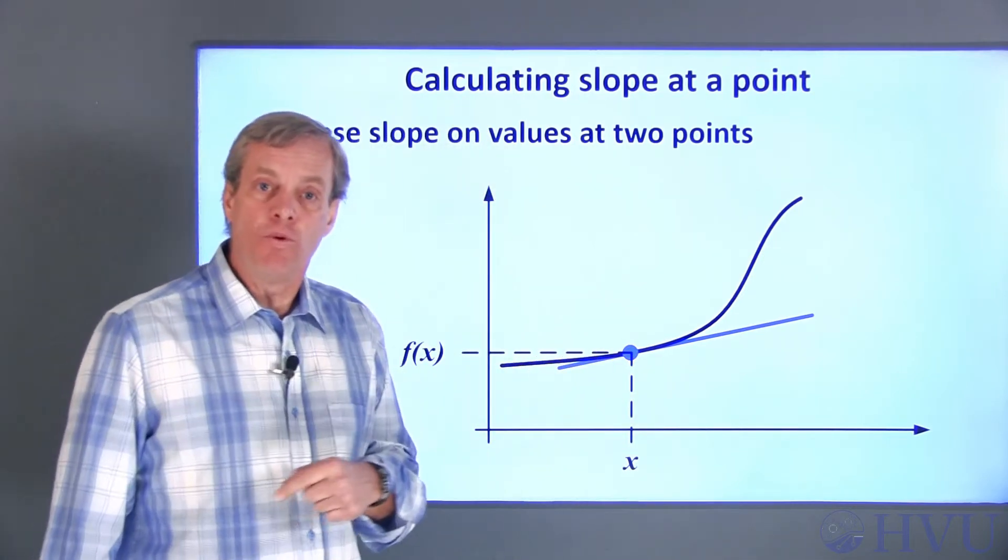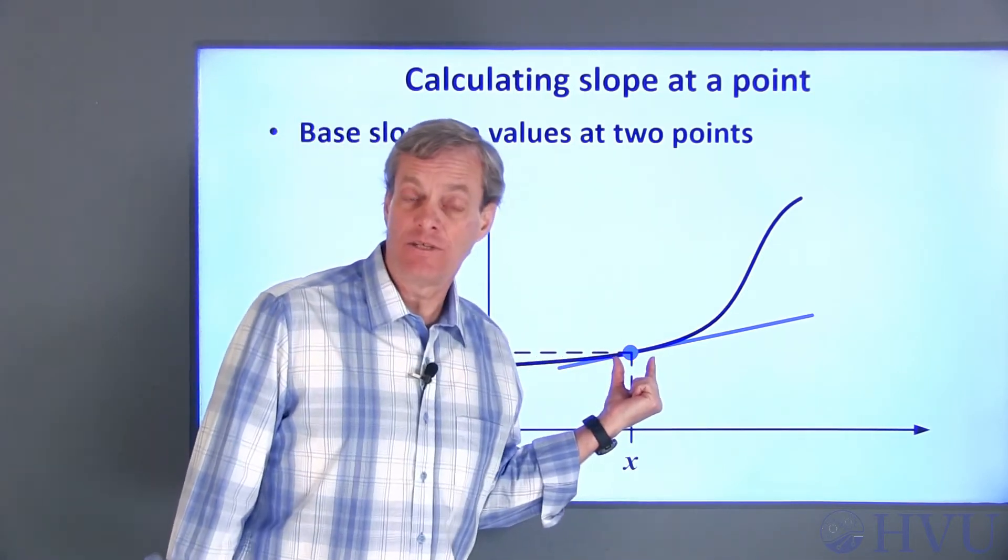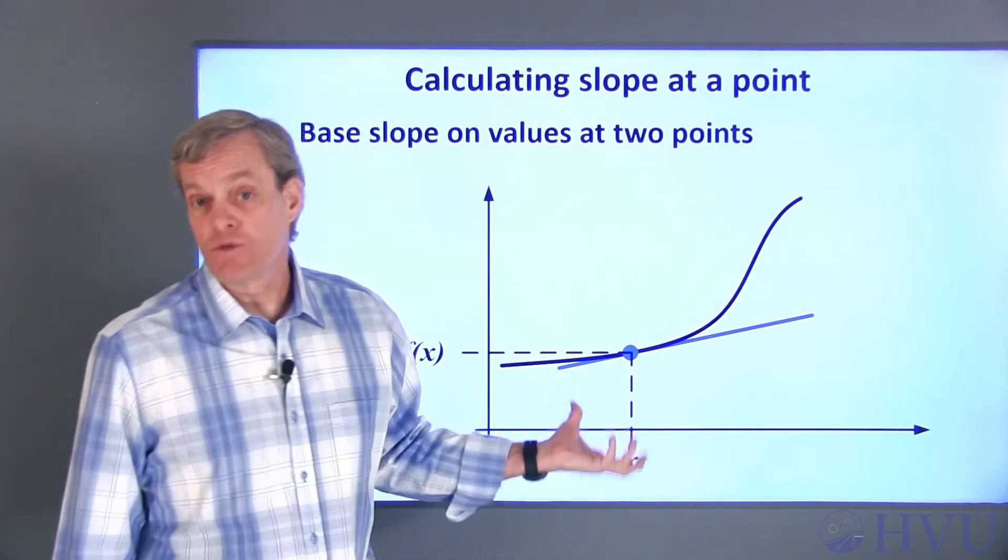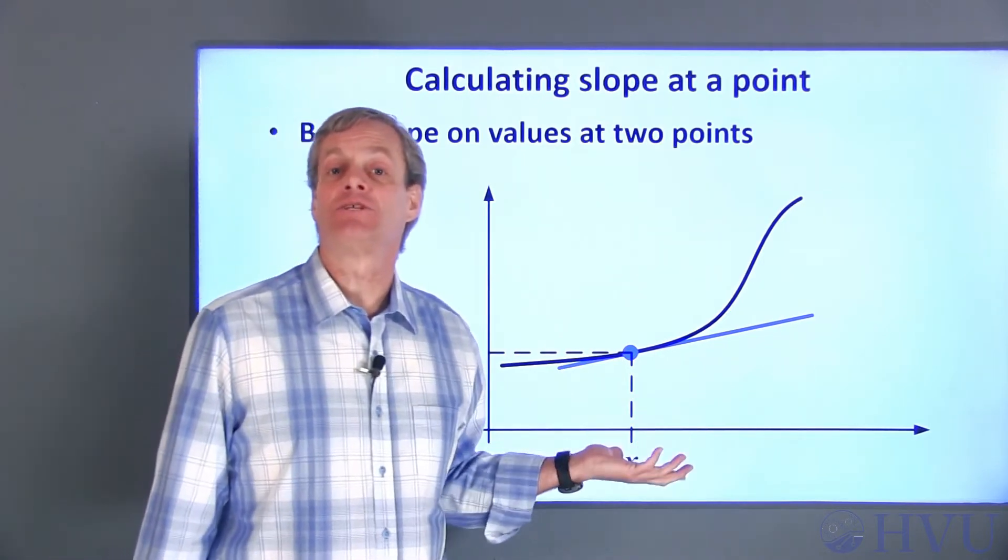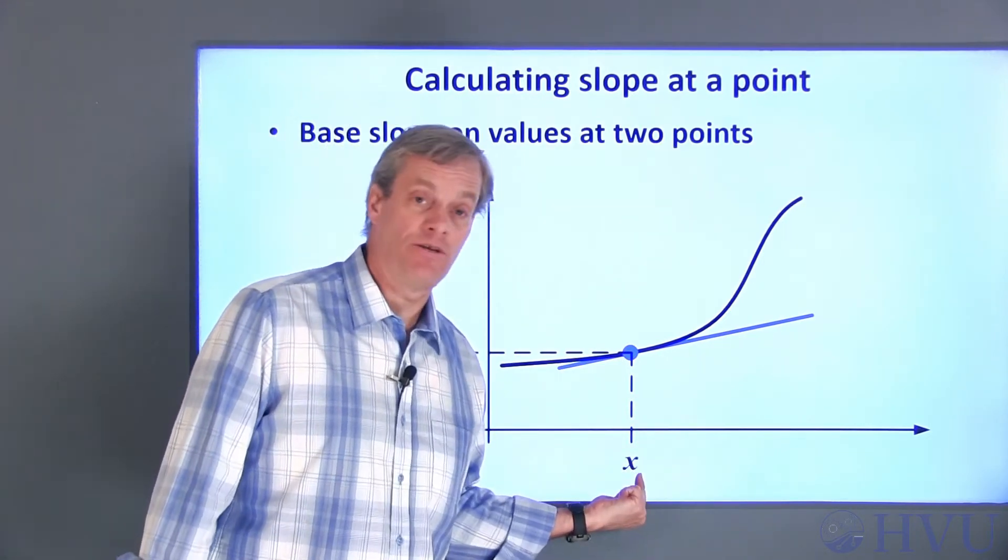So we need to pick two points on the curve that are infinitesimally close together, connect those with a straight line, and that will give us the slope of the curve at this value of x.